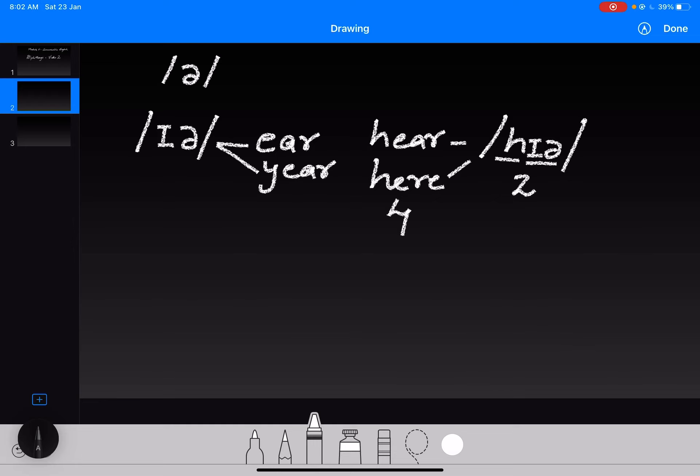Another word which we can transcribe is b-e-e-r, which has the same diphthong. We have /b/ sound followed by /ɪə/. So we have beer. So this is the /ɪə/ sound. Now the next diphthong.